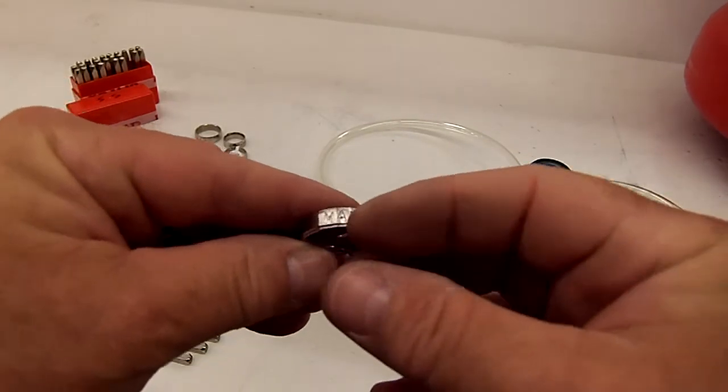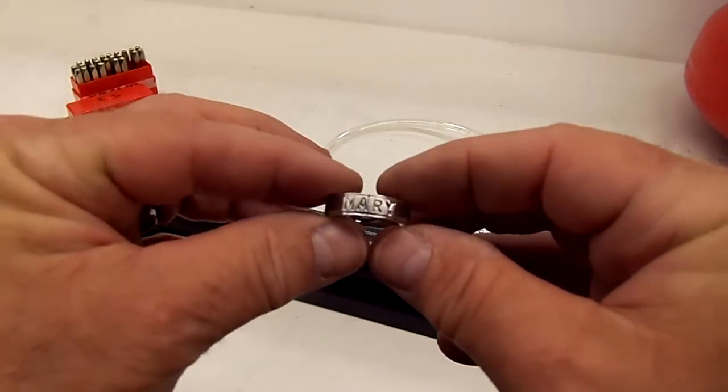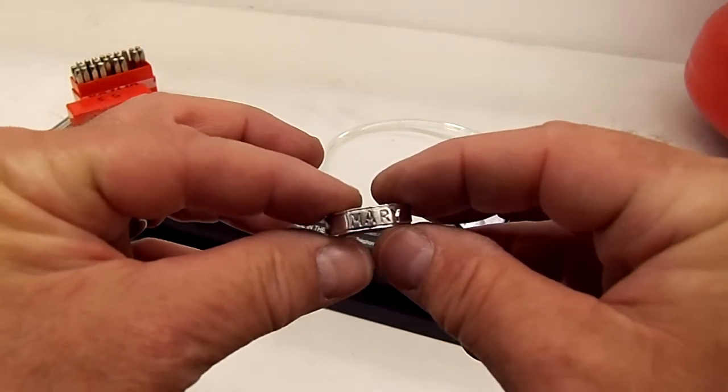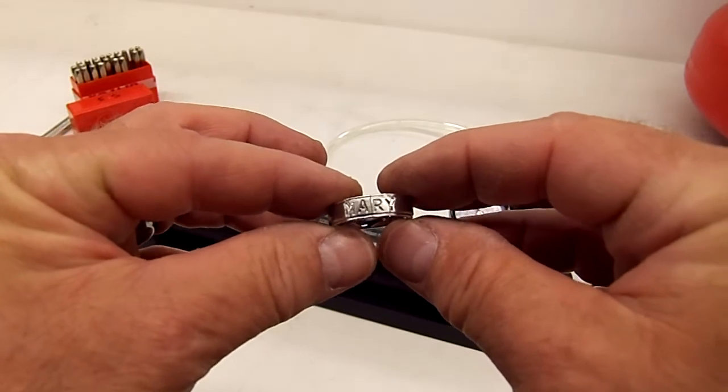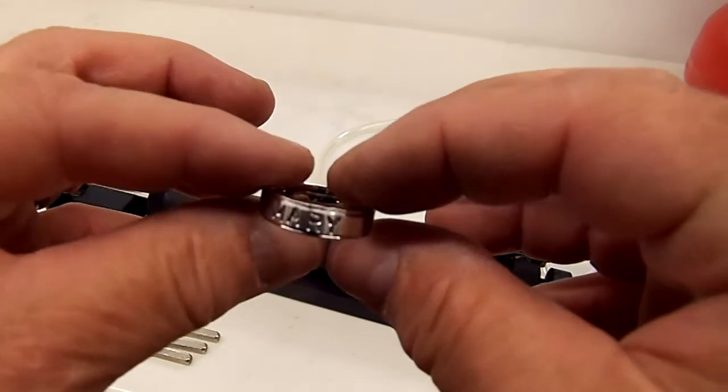Okay, so there you go. You can see how it marked Mary in there, and it's nice and deep. These are stainless steel rings, so you can tell the depth on those.